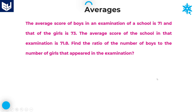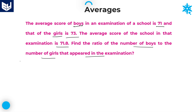Let us move on to the next question. The average score of boys in an examination of a school is 71 and that of girls is 73. The average score of the school in that examination is 71.8. Find the ratio of the number of boys and girls that appeared in the examination. This problem can be solved by two methods — a general procedure using averages, or a shortcut using the allegation concept.